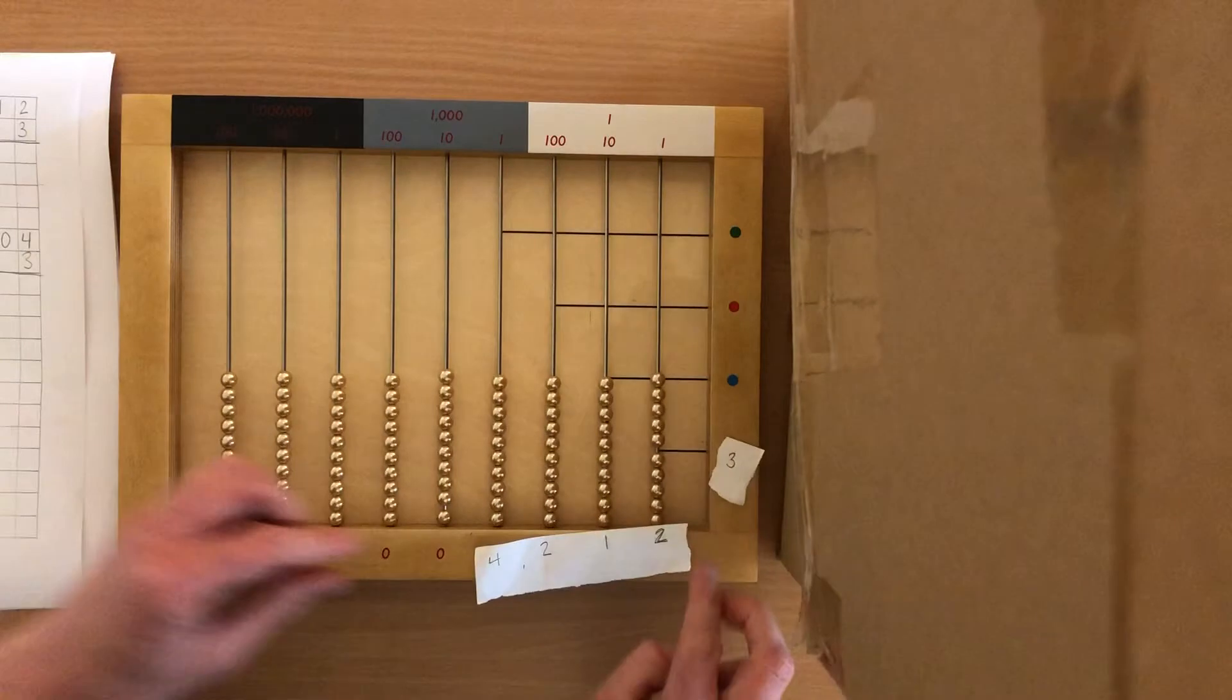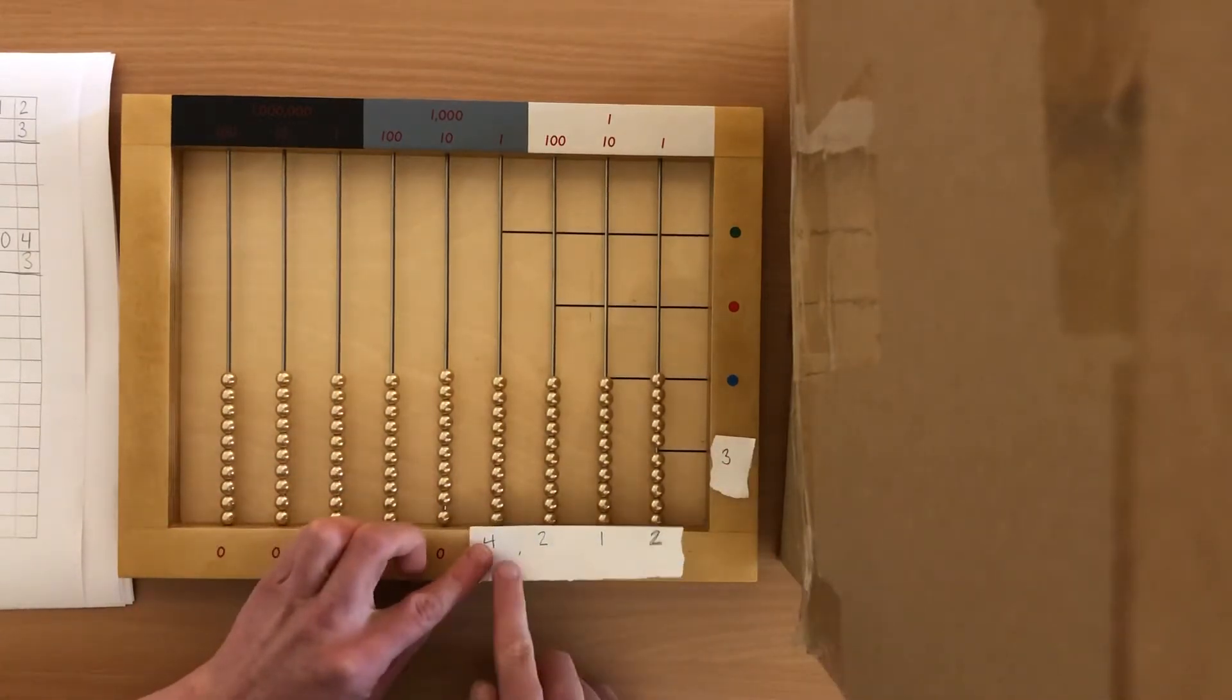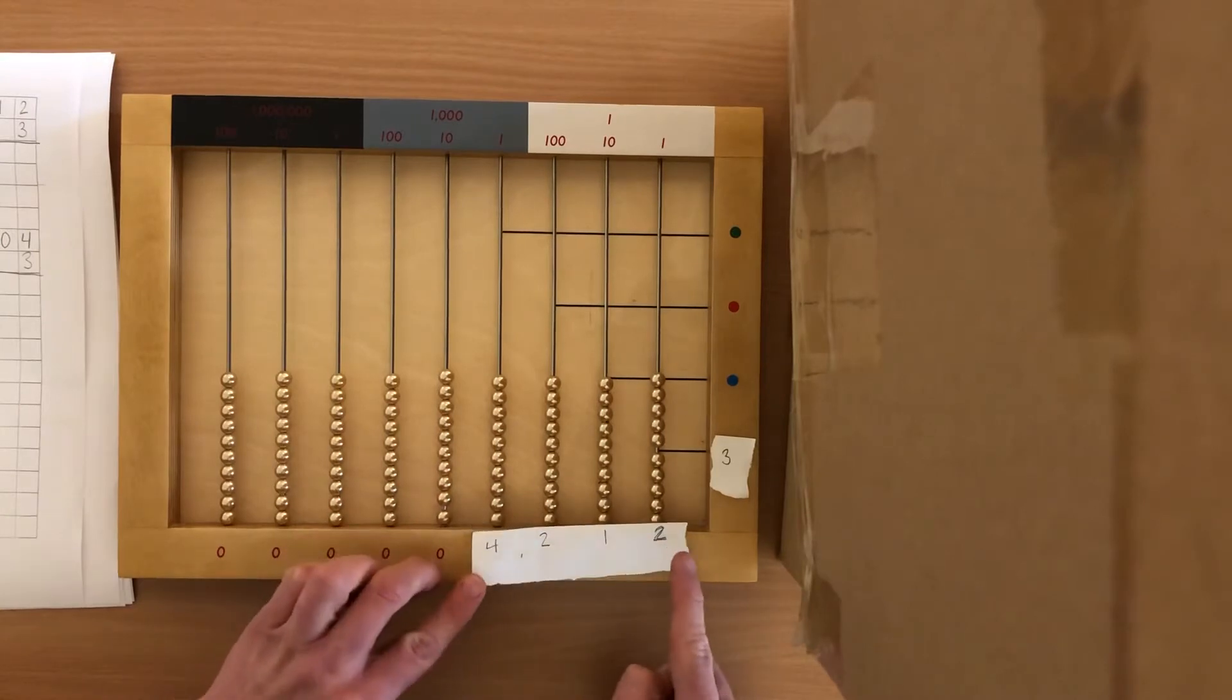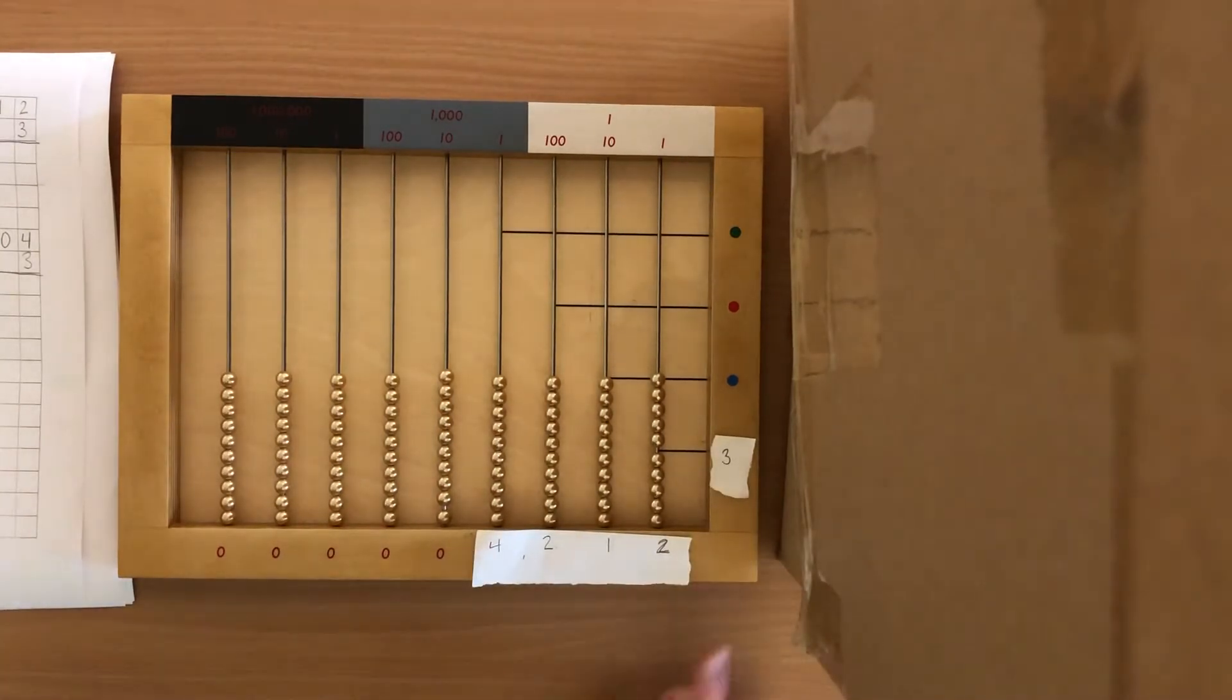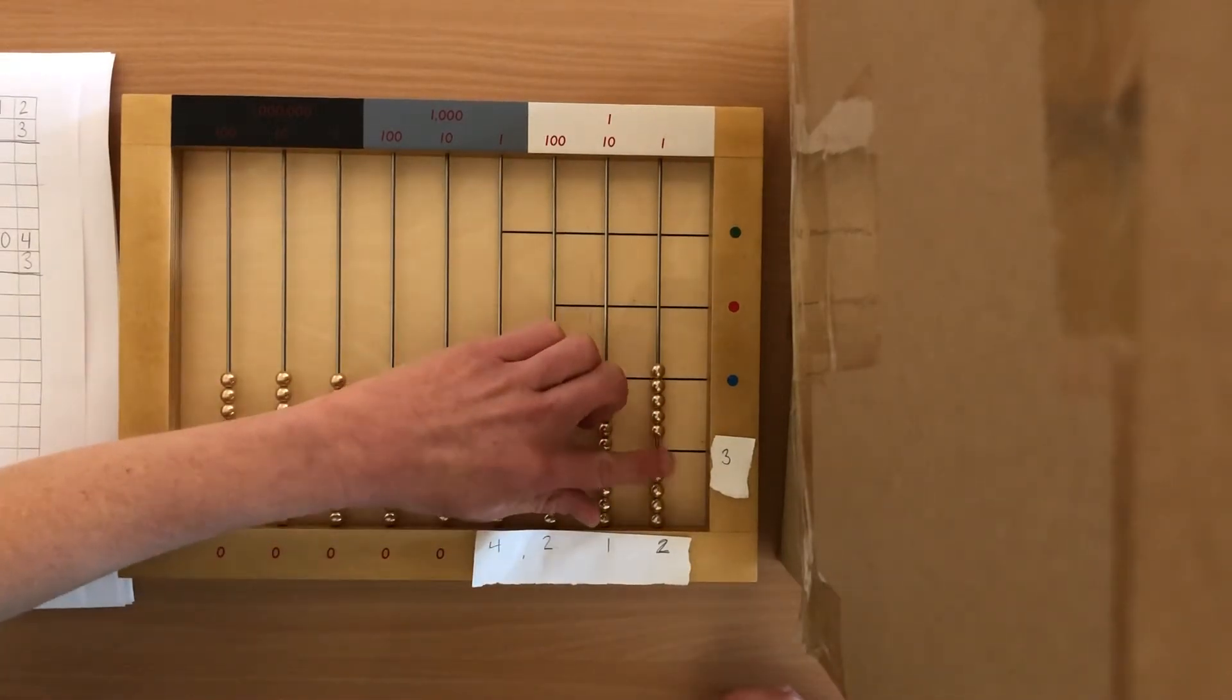Okay, right. So there we have 4, your multiplicand, 4,212 times your multiplier, which is 3. Okay, so we have 3 sets of 2, or 3 times 2, which you know is 6.